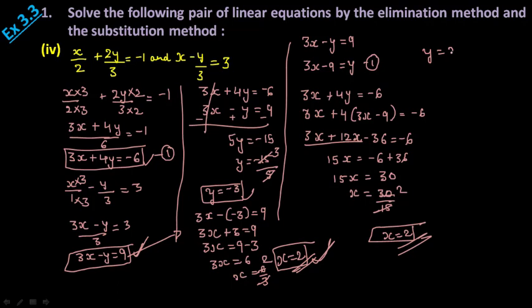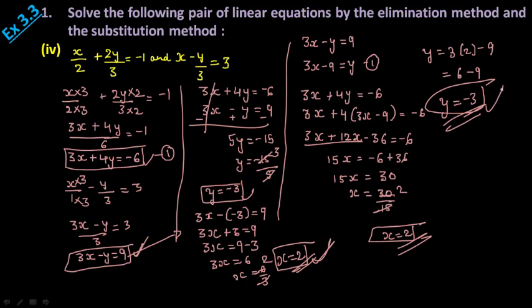Now put x = 2 in y = 3x - 9: y = 3(2) - 9 = 6 - 9 = -3. So this way we can solve all four questions of Exercise 3.3. The answers are x = 2 and y = -3.